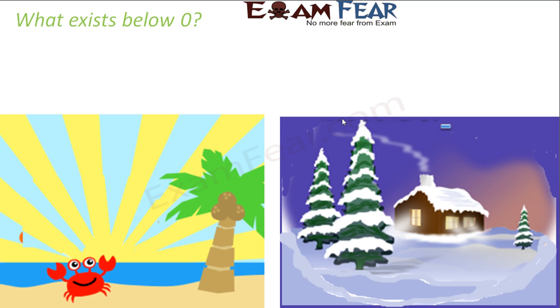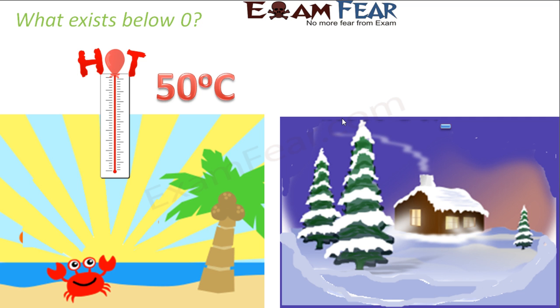If it's very hot, in a very hot summer day, the temperature might go as high as 50 degrees Celsius. In a moderately warm day, the temperature might be around 25 degrees Celsius or 22 degrees Celsius.